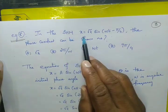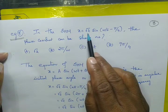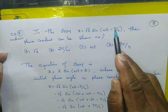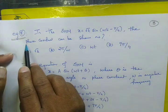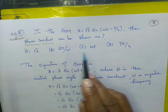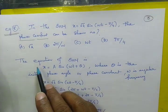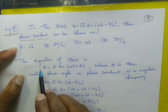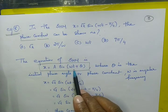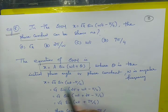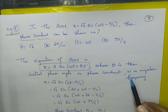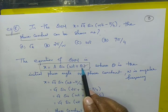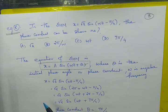In SHM, the motion is given as x equal to root 2 sin of omega t minus pi by 4. The phase constant is being asked. The standard equation of SHM is x equal to a sin of omega t plus theta, where theta is the initial phase angle or phase constant, and omega is the angular frequency.